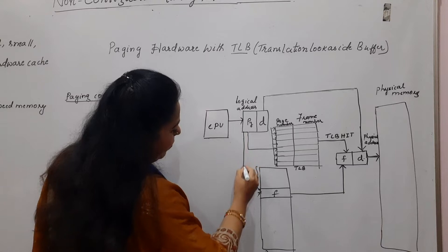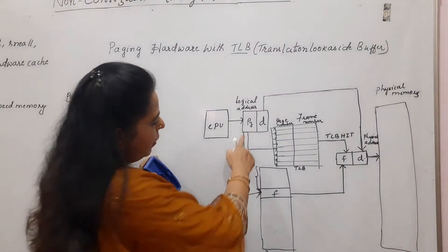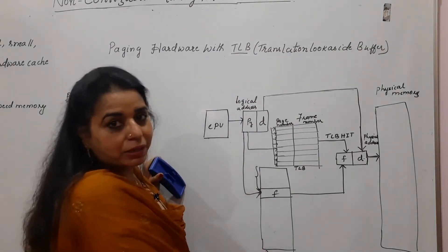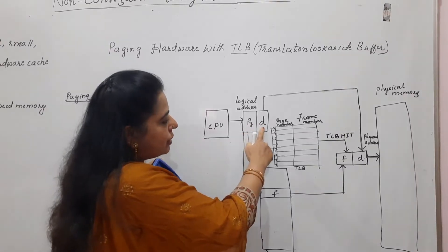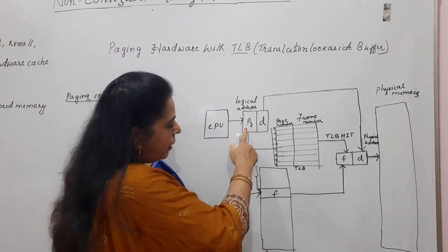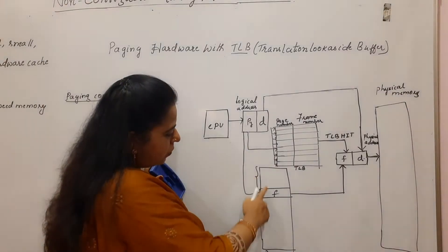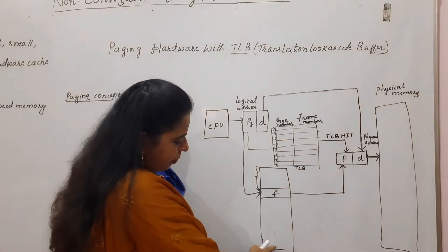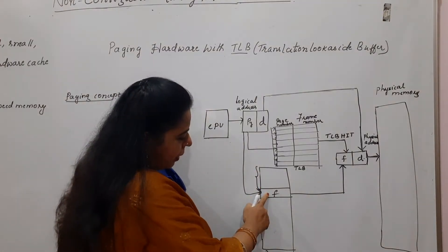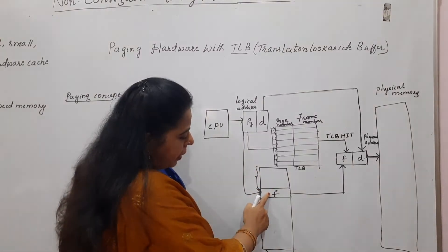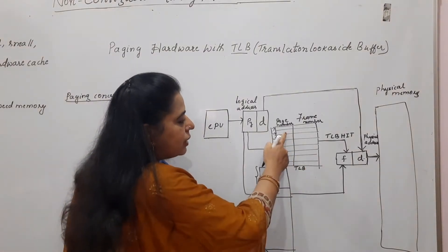This page number will point to a particular location in the page table. The CPU generates the logical address consisting of page number and displacement. The CPU normally has to access the main memory to access the page table and fetch the frame number. Once it finds the frame number, that information is placed into the TLB.